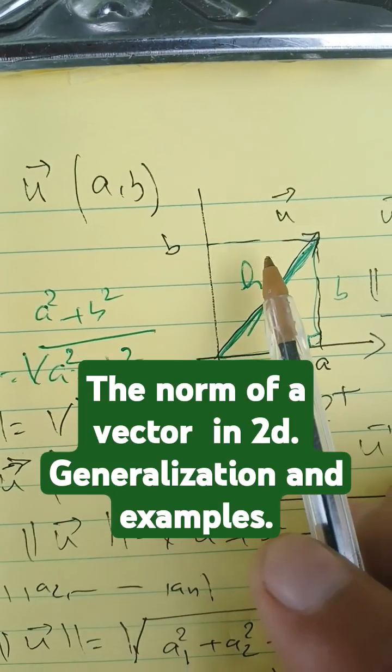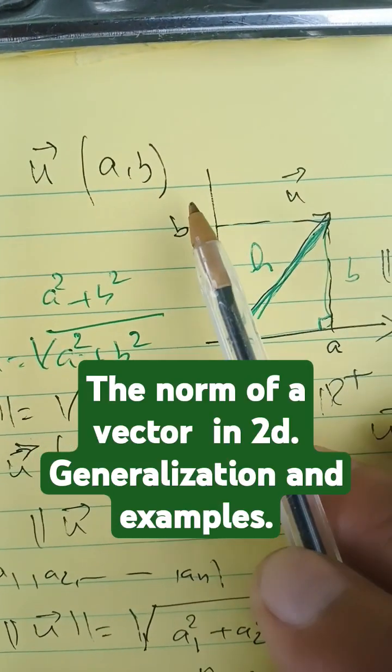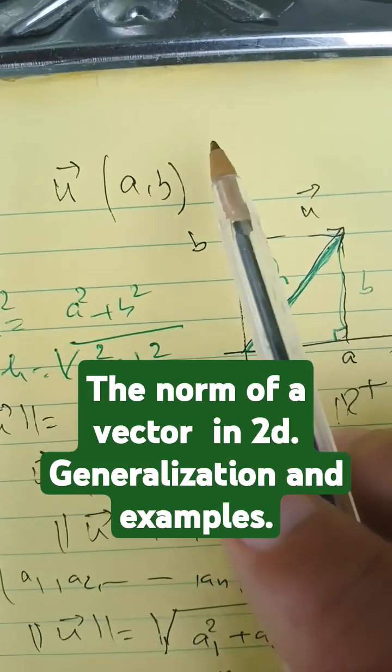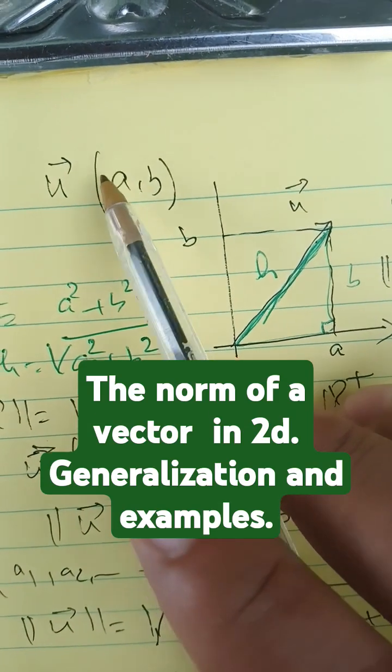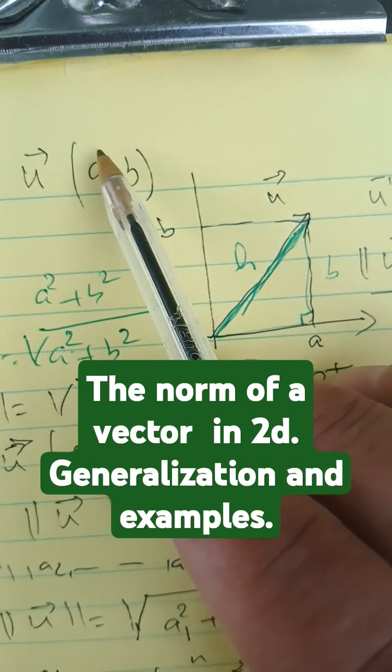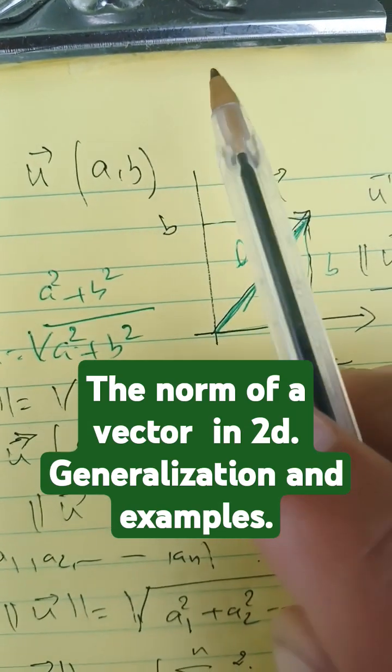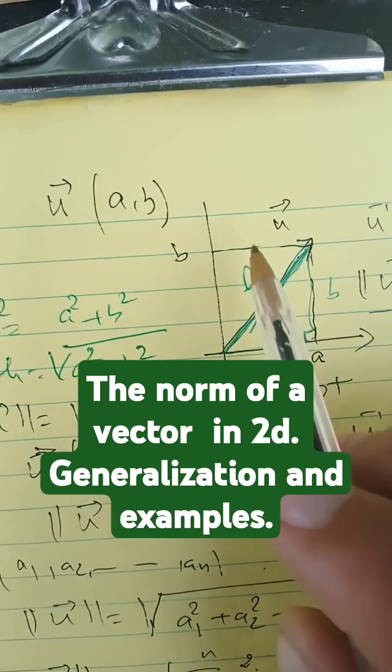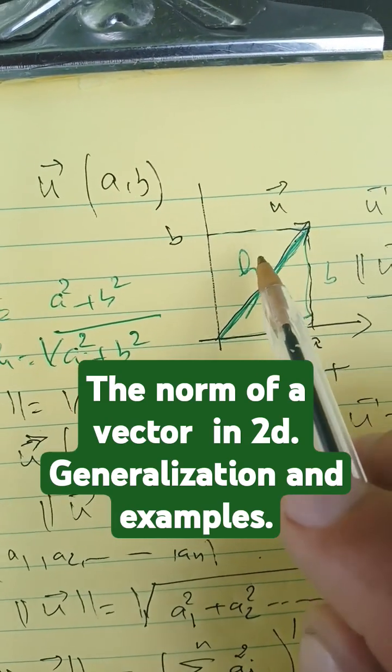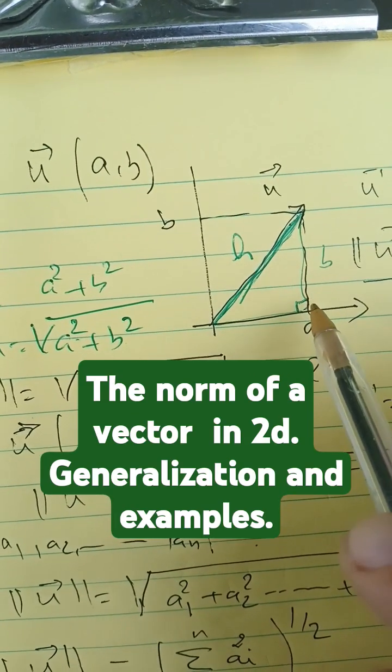In this video we're going to define what we mean by the norm of a vector in the simplest case. We can have a vector in 2D, that means in the plane here, so we have a u that has a as